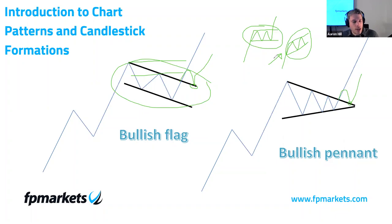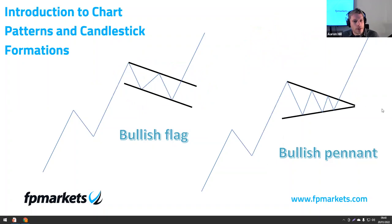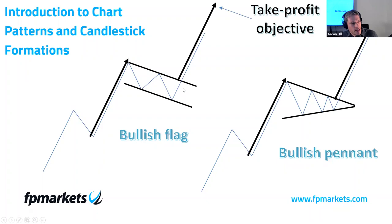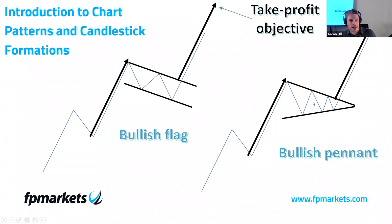The price target for these patterns following a successful breach to the upside — and let me reiterate, this is the same for a bearish pattern only to the downside — is measured by taking the distance from the beginning of the sharp up move to the first reversal point within the formation. You then take this value and apply it to the breakout point. It's kind of similar to the AB equals CD formation — you essentially take the value from the sharp up move and apply that to the breakout point, nothing more, nothing less.